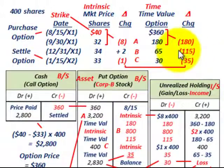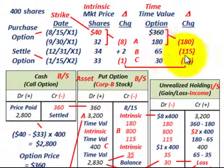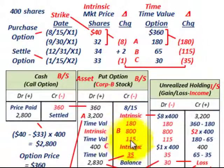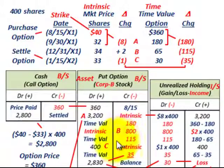The time value portion was reduced from $180 to $65, so just that net amount of $115. Again, that just reduces our put option account for the time value portion. So we've taken care of that period.